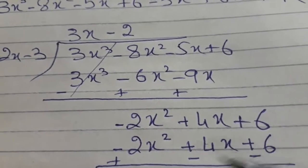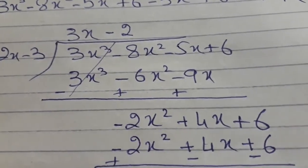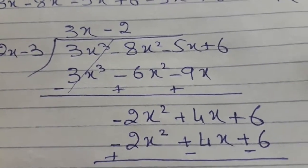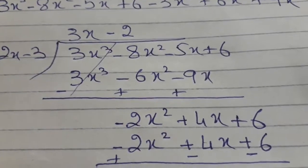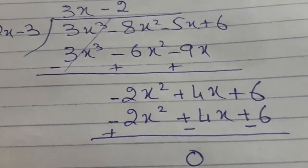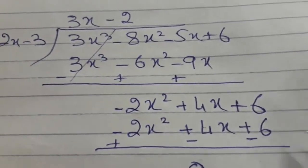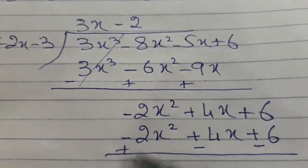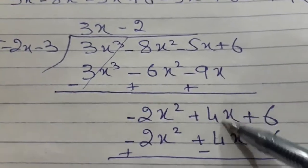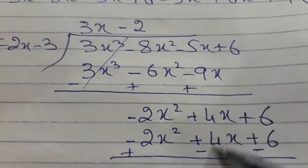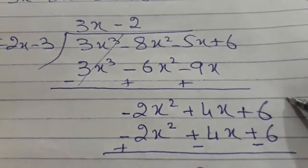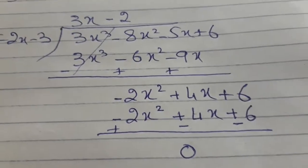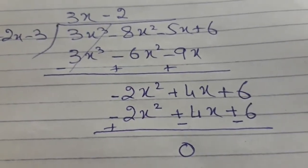Now the signs will change again. Minus 2x squared cancels out; plus 4x minus 4x cancels out; and the constants cancel too — giving a remainder of zero.